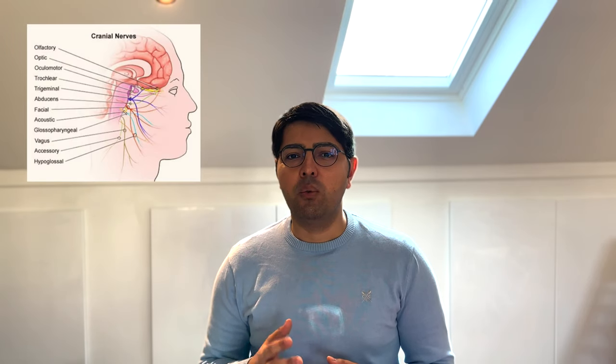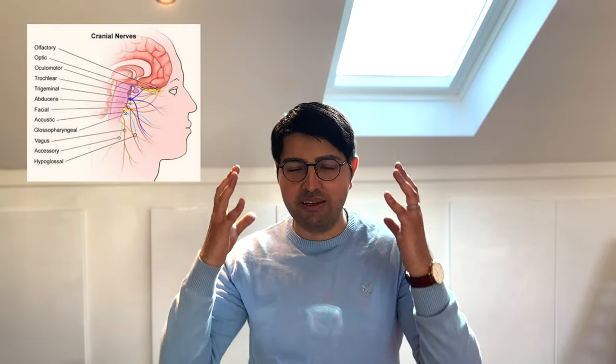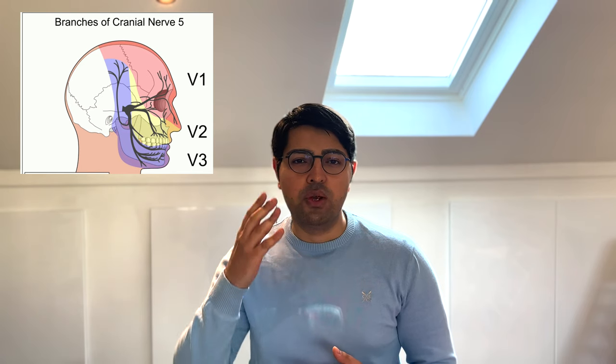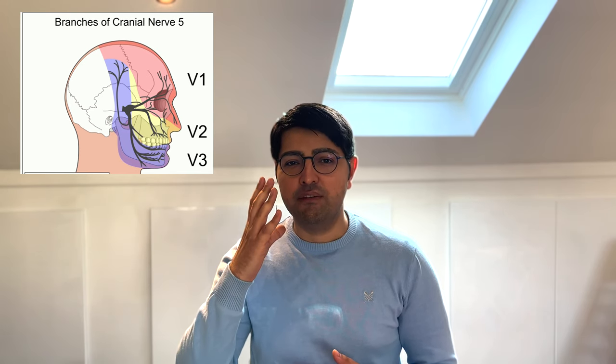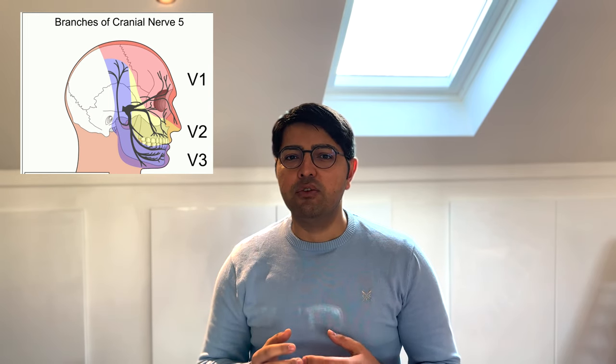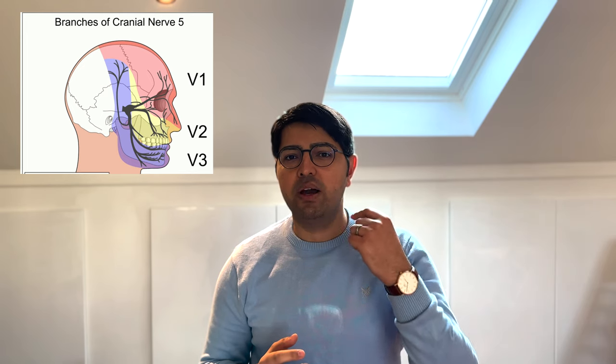Herpes zoster ophthalmicus targets the fifth cranial nerve, which is one of 12 cranial nerves basically contained within the skull. The fifth cranial nerve is responsible for providing sensation to the entirety of the face. It has several branches, and those branches are divided into V1, V2, and V3, which you can see from the picture on screen now.